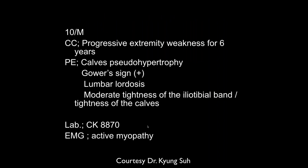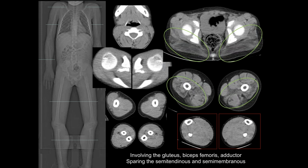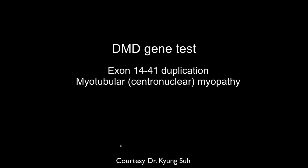A 10-year-old with progressive extremity weakness for six years, pseudohypertrophy, lumbar lordosis, moderate iliotibial band tightness, and very high CK — active myopathy. There is symmetrical atrophy. There are many different genetic abnormalities that can produce this clinical syndrome, and over your careers there will probably be significant progression in understanding what these are and in potential treatments.